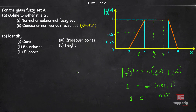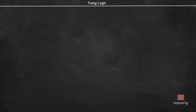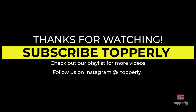Now, I will leave the rest of the questions as homework for you. Please comment your answers in the comment section so that it will be useful for others also. That's all for this lecture. In the next video, we will learn about defuzzification to crisp sets. If you have any doubts in this lecture, please feel free to ask them in the comments. Either me or some other viewer will surely help you out. If you found this lecture useful, please like the video and support us by subscribing to the channel. Thank you for watching Topperly and have a great day.